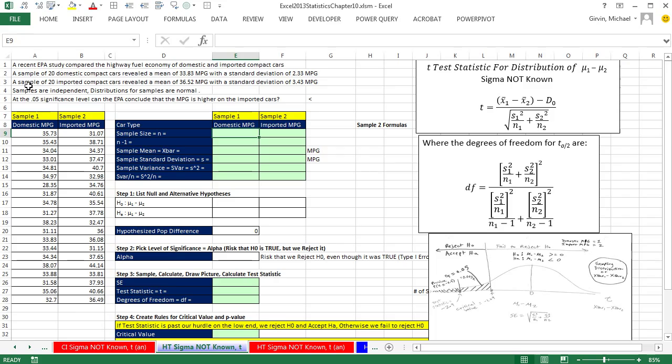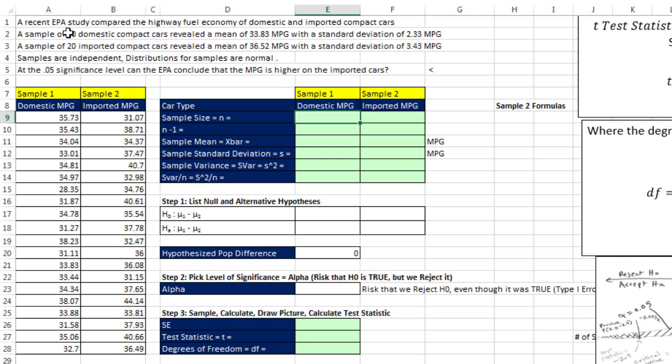This is the same example we did last video with confidence intervals, but now we're going to do hypothesis testing. A recent EPA study compared the highway fuel economy of domestic and imported compact cars. Samples are independent. That means we took two samples, and they're not related in any way. Distributions for the sample are normal. We'll assume the miles per gallon are normally distributed. At the 5% significance level, can the EPA conclude that the miles per gallon is higher on the imported cars?